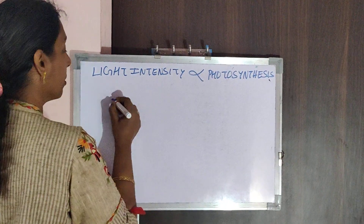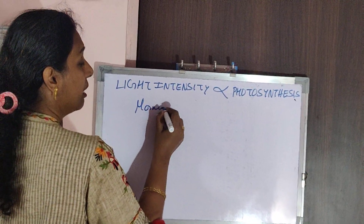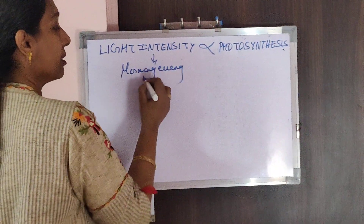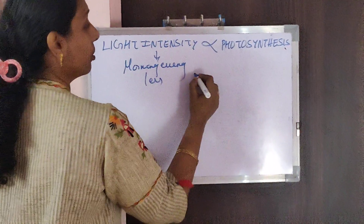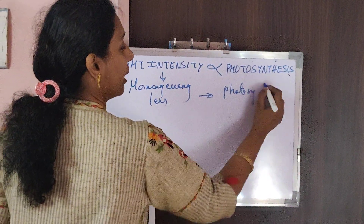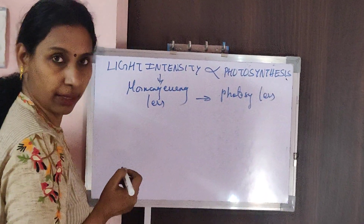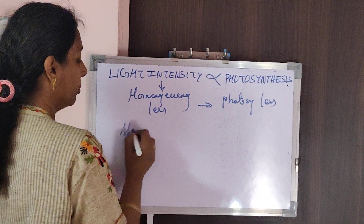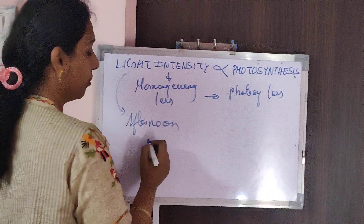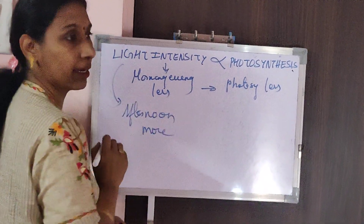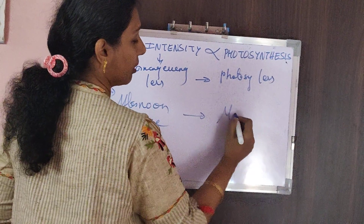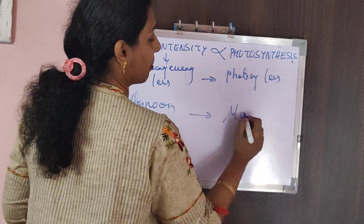During the morning and evening hours, the light intensity is less, so the photosynthetic activity will also be less. But what about in the afternoon? Since you get a lot of light — the intensity is very high during afternoons — the photosynthetic activity will also be maximum.